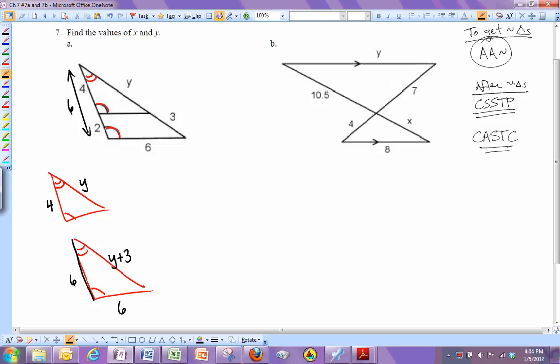So what I can do now is I'm allowed to say that the sides are proportional. So what I'm going to do is I'm going to set up a proportion. 4 goes, this 4 right here goes with this 6 right there, the same way that this y over here goes with this y plus 3 down there. y over y plus 3.